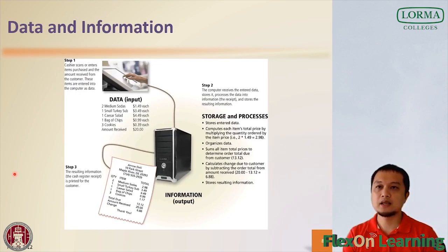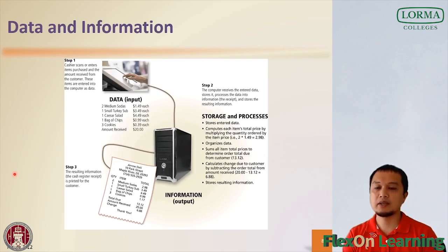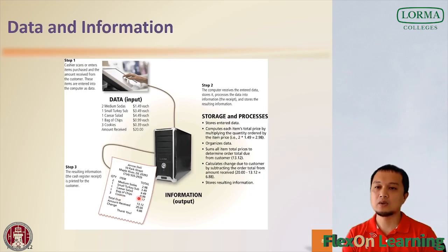Computers process data into information and often store the data and resulting information for future use. Data is a collection of unprocessed items which can include text, numbers, images, videos and audio. Information conveys meaning to users. Business and home users can make well-informed decisions because they have instant access to information anywhere in the world. For example, item ordered, item price, quantity ordered and the amount received all represent data. The computer processes that data to produce a cash register receipt — that is your information, or the output.